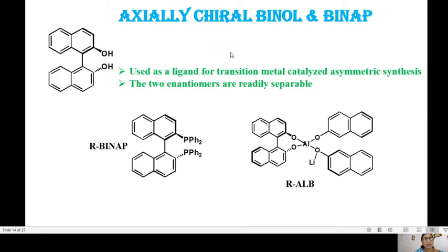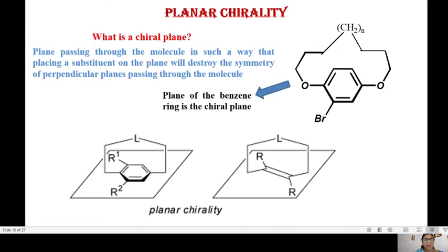Now we will move on to learn about planar chirality. Just like an axis, a plane also can be chiral. What is meant by a chiral plane? The plane passing through the molecule in such a way that placing a substituent on the plane will destroy the symmetry of perpendicular planes passing through the molecule. Then it is called a chiral plane.